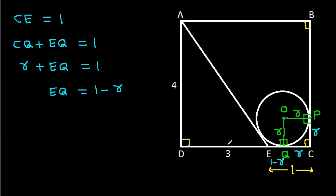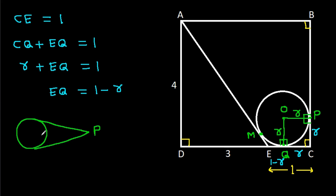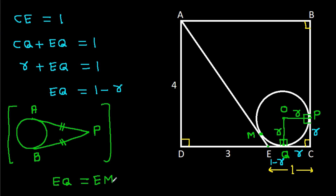Now suppose this point is M. In any circle, from any external point, if we draw two tangents to the circle — suppose the tangent points are A and B — then PA equals PB. So from point E, EQ will be equal to EM. And since EQ is 1 minus R, EM will also be 1 minus R.